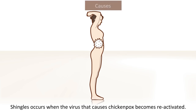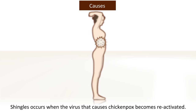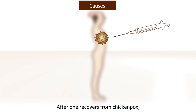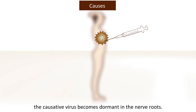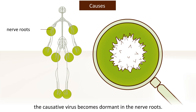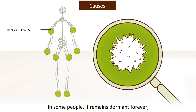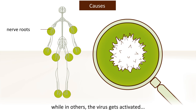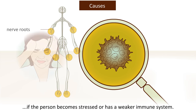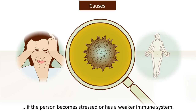Shingles occurs when the virus that causes chickenpox becomes reactivated. After one recovers from chickenpox, the causative virus becomes dormant in the nerve roots. In some people it remains dormant forever, while in others the virus gets activated if the person becomes stressed or has a weaker immune system.